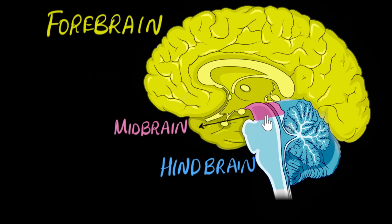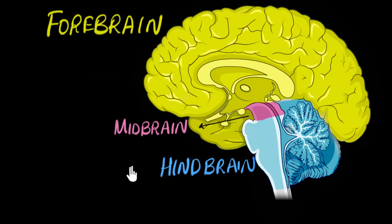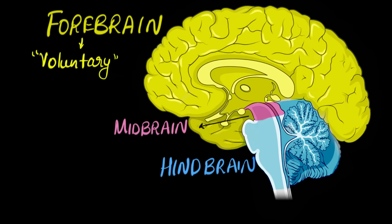This is the hindbrain, and the hindbrain also consists of this section — it looks like a mini brain all by itself. That and the remaining portion of that brain stem is basically what we call the hindbrain. To get a broad sense of what these parts do: the forebrain is responsible for all the voluntary functions, and the midbrain and the hindbrain together are responsible for all the involuntary functions.